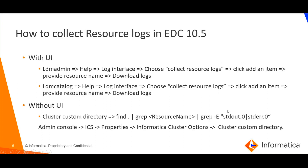How to collect resource logs in ADC 10.5: using the UI, you can collect the aggregated resource logs using one-click log collector, which is the same as collecting catalog service logs except you select resource logs. To collect resource logs without UI, log into the domain machine, go to the cluster custom directory, and run the find command. To find the cluster custom directory path, log into the admin console, go to Informatica cluster service, and in the properties tab find the Informatica cluster options.